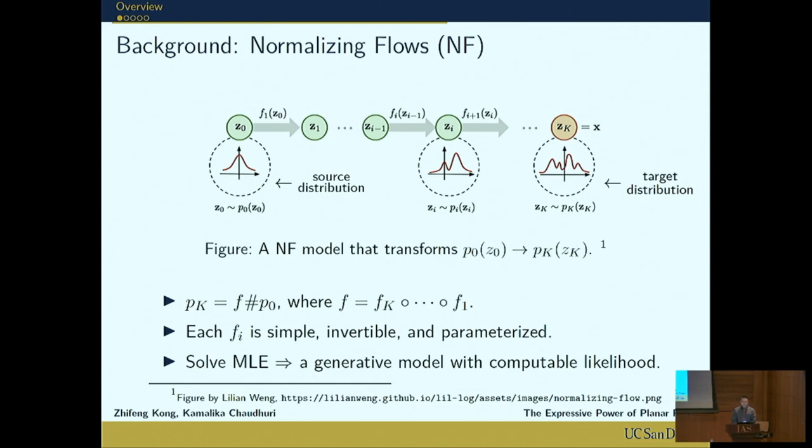We can use an invertible transformation to transform it into another random variable z1, and then apply an invertible f2 to transform into z2, and finally we have zk with density pk. This is called the target distribution or the output distribution.